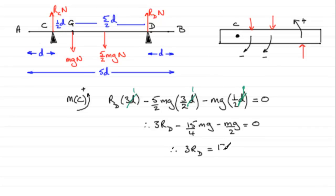And if I add that to both sides I get 3RD equals 17 quarters mg. And now just need to divide by three or times this by a third. And I get RD equals 17 over 12 mg. 17 over 12 mg newtons would be our contact force then at D.